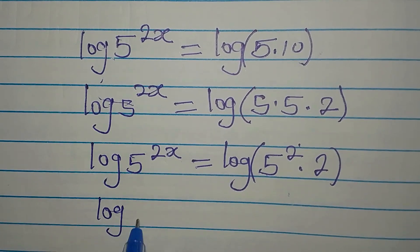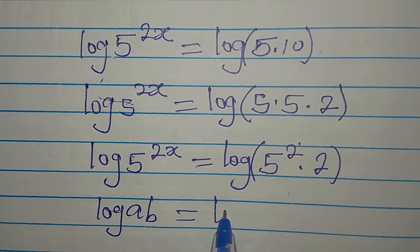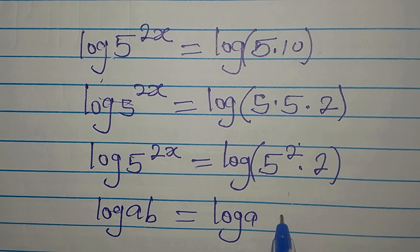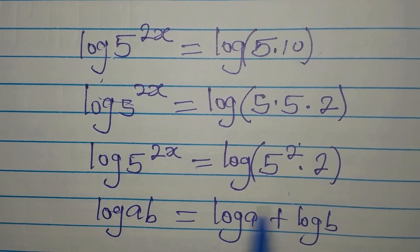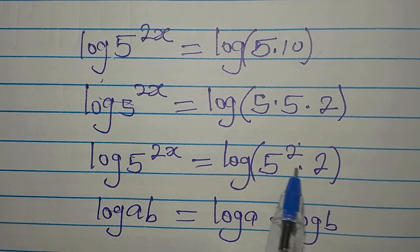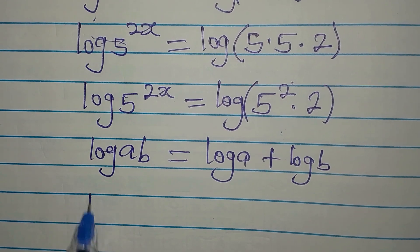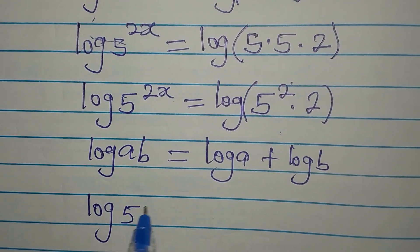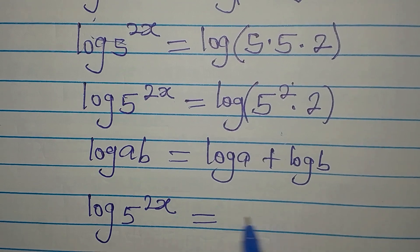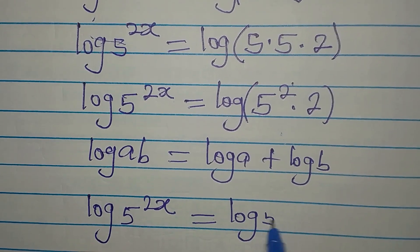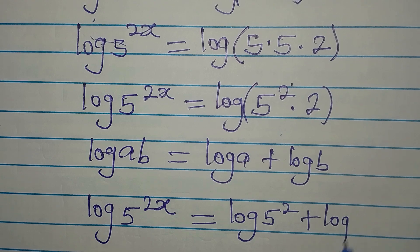Now, do you know that if you have log(ab) it is the same thing as log a plus log b? I'm going to apply that same rule here, so we now have log 5 to the power of 2x being equal to log 5 squared plus log 2.